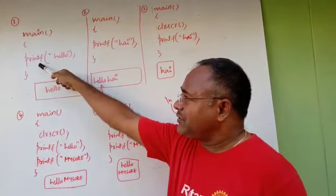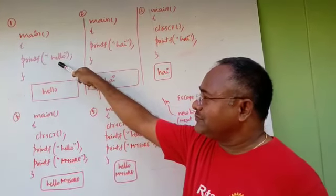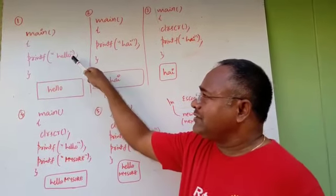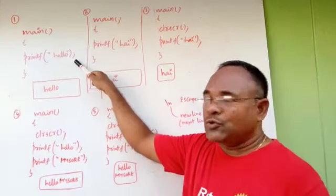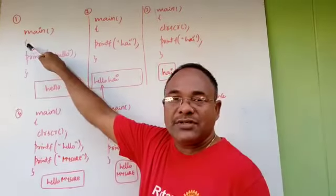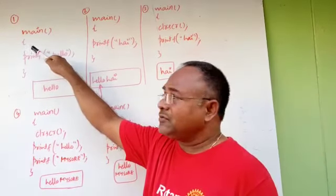Here we have a statement printf and hello. Any statement in C language must end with a semicolon. And group of statements must be placed within braces only. You call it as a block.